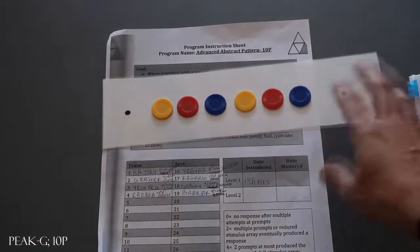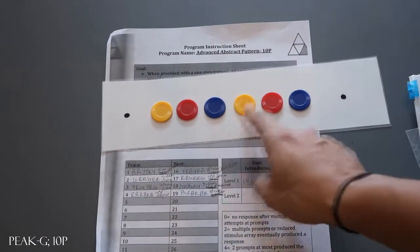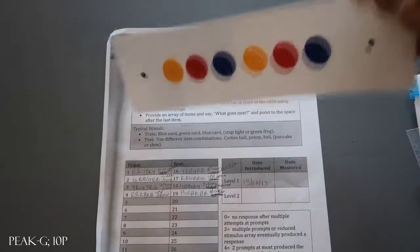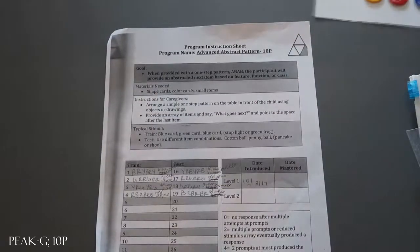And then you flip it for the test. So yellow, red, blue, yellow, red, blue, what comes next? So the same strip is used for one train class and then one test class.